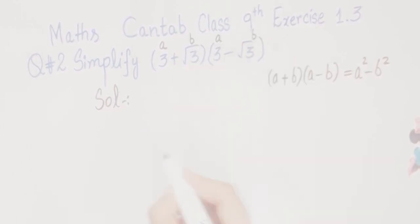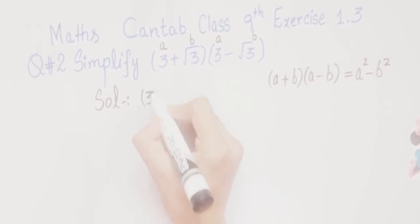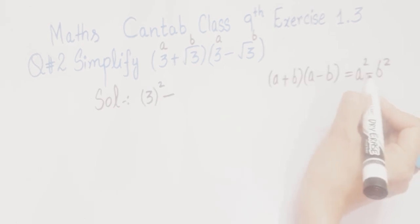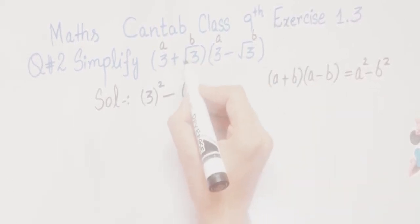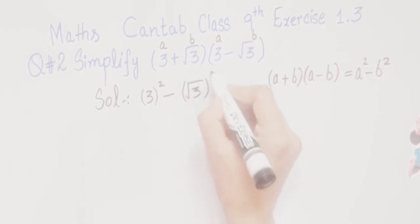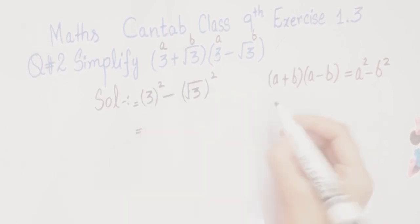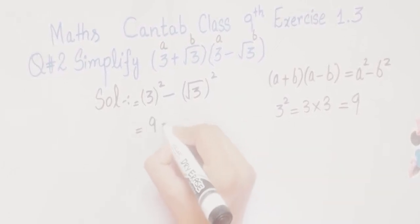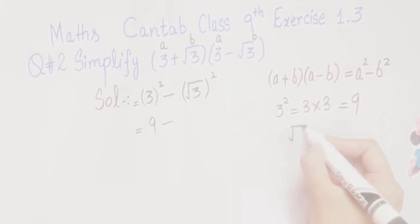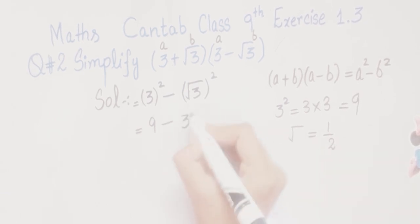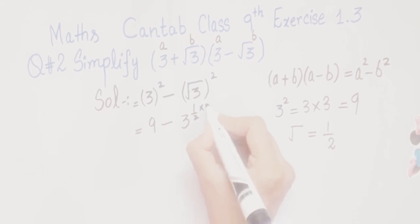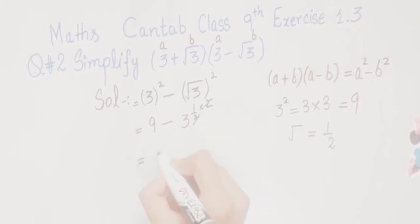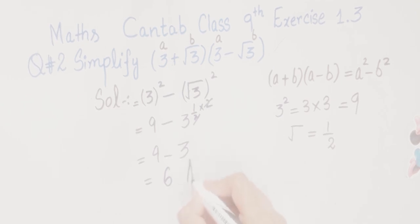The first term is a and the second term is b. Square of the first term means 3² minus square of the second term. 3² equals 9, and square root of 3 squared: since √3 = 3^(1/2), multiplying the exponent by 2 gives 3. So we get 9 minus 3, which equals 6. This is the answer of the first part.